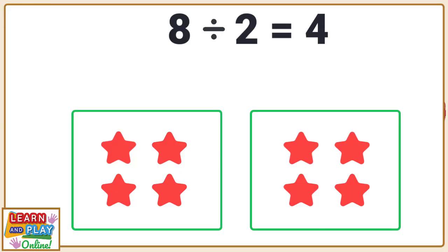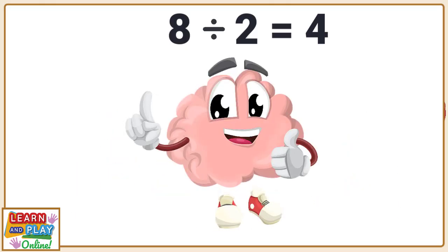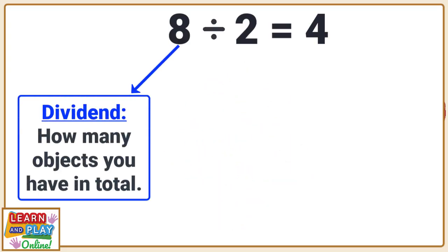Now that we have gone through some examples of division questions, let's learn the names of the parts in a division number sentence. The first number is called the dividend. It tells you how many objects you have in total.